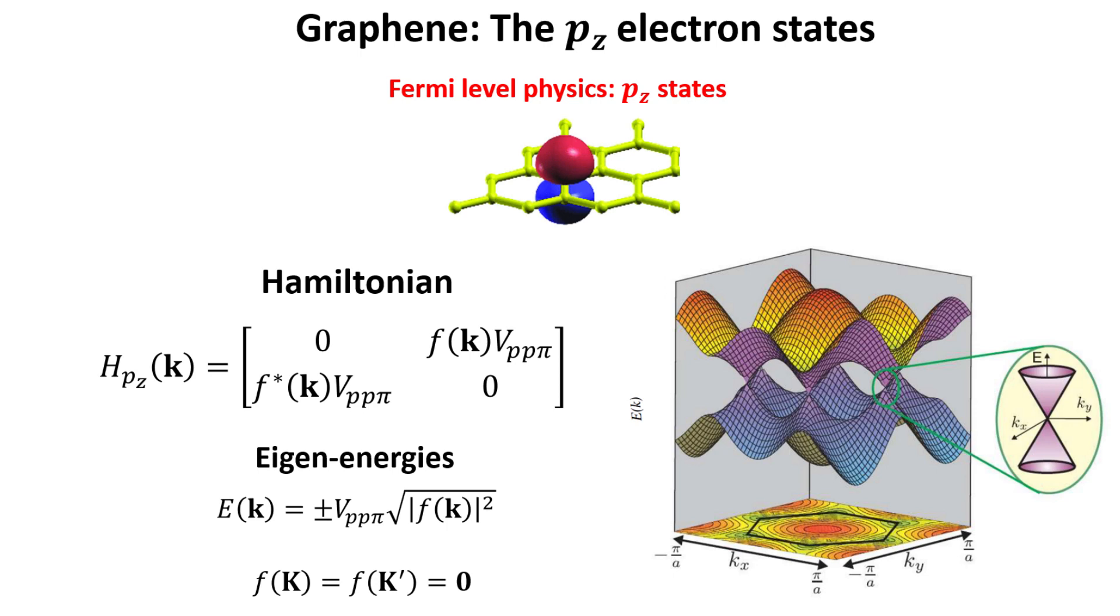The figure also shows what the bands look like at the vicinity of one of these points. Note that the conduction and valence bands have a cone shape whose tips meet together at the Fermi level.